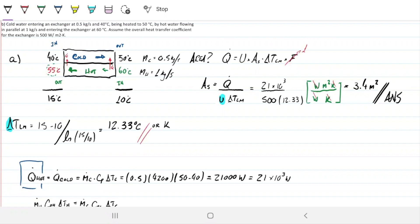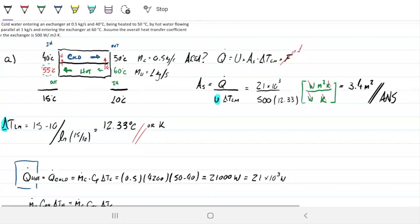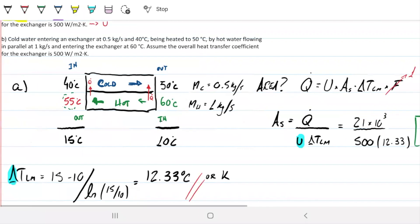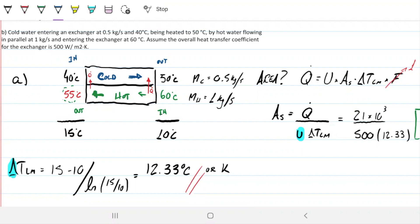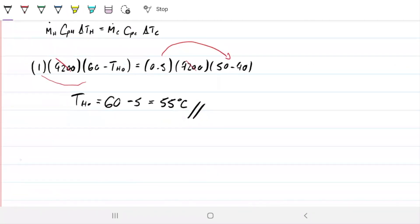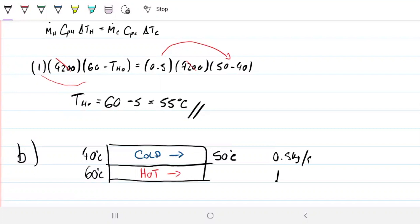Now we're going to solve part B. In part B, everything is exactly the same except this will be in parallel. Cold water entering at 0.5 kg/s, 40°C being heated to 50°C by hot water entering in parallel at 1 kg/s, entering at 60°C. Overall heat transfer coefficient is 500. Everything is the same except it is parallel flow. Method is exactly the same. We're going to draw a little rectangle, put cold, put hot, and we know hot enters at 60, cold enters at 40, cold leaves at 50. Cold has 0.5 kg/s rate, and hot has 1 kg/s rate. Everything is the same except it's parallel.